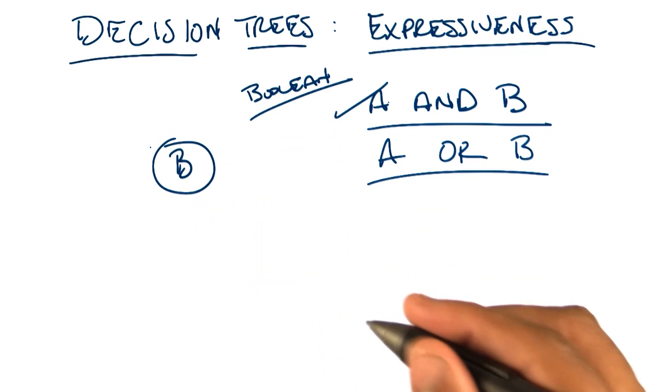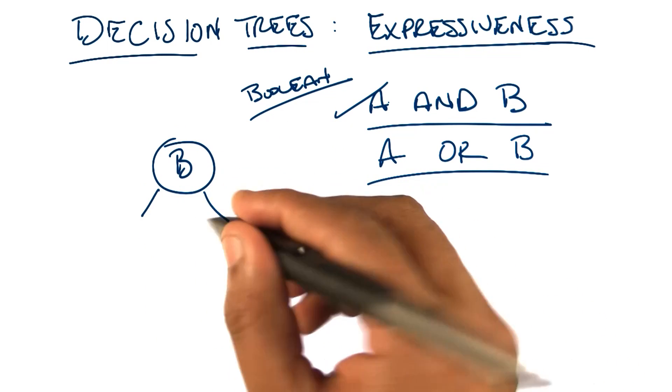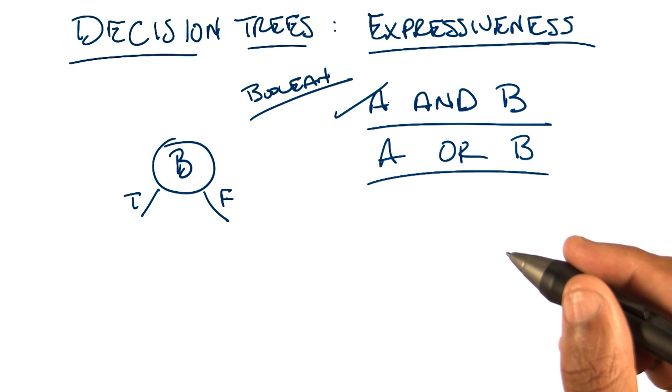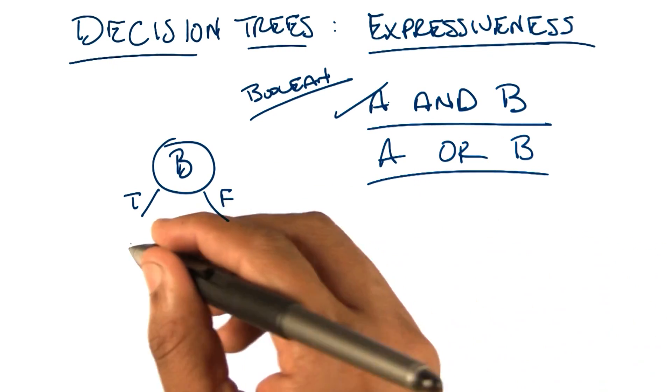Okay. True, false. True, false. All right. And now, if B is true, we know that A or B is true. So we can put a plus under the left side.